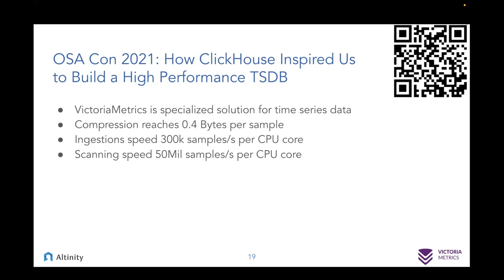All these technical details help Victoria Metrics be efficient. The compression ratio reaches 0.4 bytes per sample. Ingestion speed is around 300,000 samples per second per CPU core, and the scanning speed is about 50 million samples per CPU core. Along with clustering and horizontal scalability, it gives you basically infinite storage for time series processing.